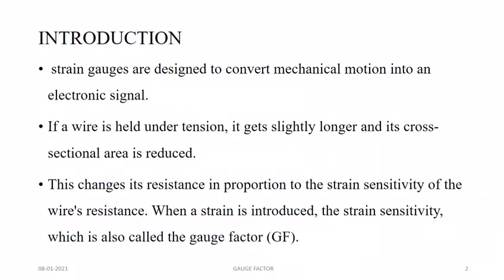If we apply a tension to the wire, it is slightly elongated — that is an increment in its length. So the length increases and the cross-sectional area will be reduced — that is a decrement in the cross-sectional area. There is a change in resistance in proportion to the strain sensitivity of the wire's resistance. This strain sensitivity is also called gauge factor, which is denoted as GF.